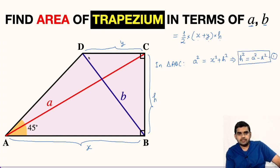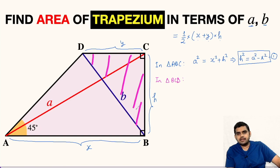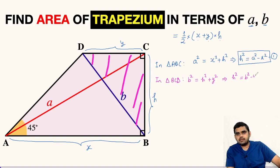Likewise, let us focus on triangle BCD. In triangle BCD, it is also a right-angle triangle. Using the Pythagorean theorem, we get b² = H² + Y². From here, H² = b² − Y². Let this be equation number 2.